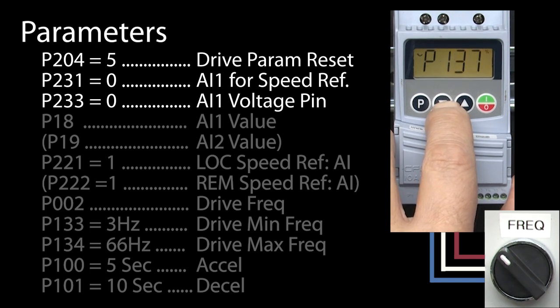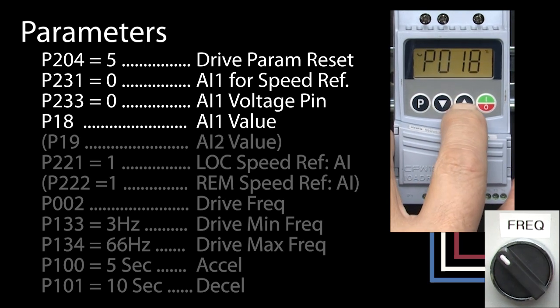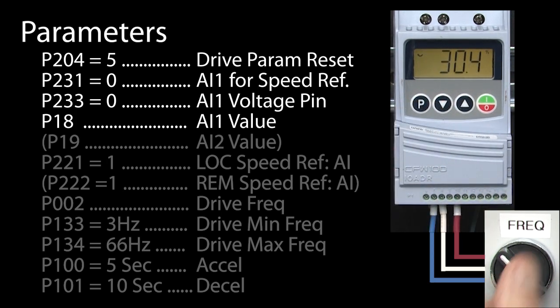To verify we did all of that correctly, we can go to parameter 18, which shows us the value the drive sees on analog input 1. Rotate the potentiometer, and sure enough, full counterclockwise gives me a zero reading and full clockwise gives me 100%. Perfect. I'm going to put that back at zero so we don't get any surprises when we connect that to the motor.